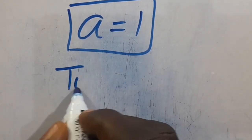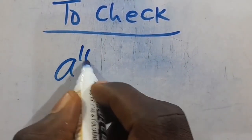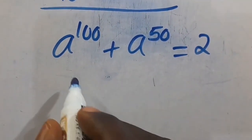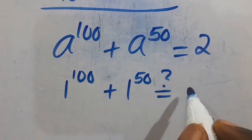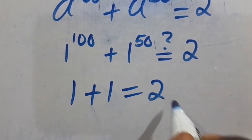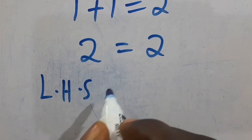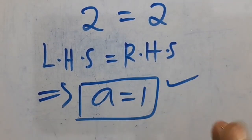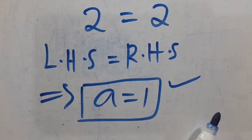To verify: A to the power of 100 plus A to the power of 50 equals 2. When A equals 1, we have 1 to the power of 100 plus 1 to the power of 50 equals 2, which gives 1 plus 1 equals 2, so 2 equals 2. The left-hand side equals the right-hand side, confirming that A equals 1 satisfies the problem. If you find this video interesting, don't forget to share, like, comment, and subscribe to our YouTube channel for more tutorial videos.